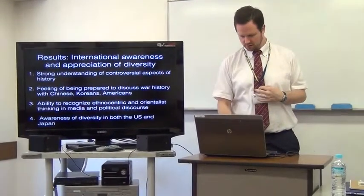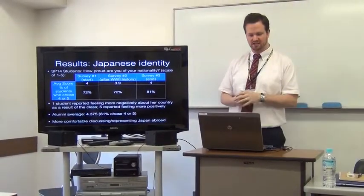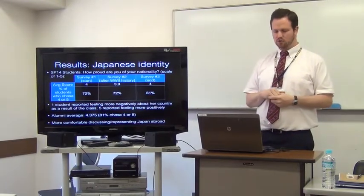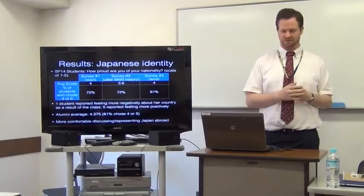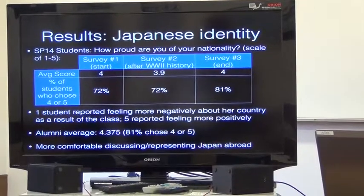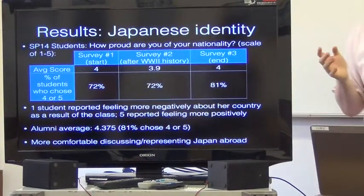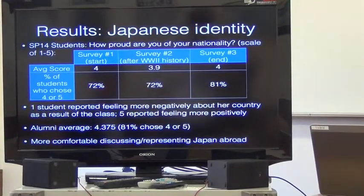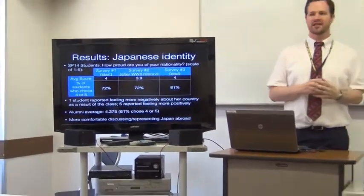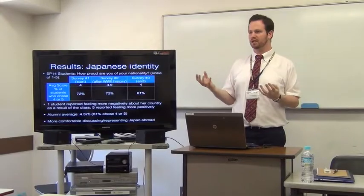If I approach the Ministry of Education's goals about protecting Japanese identity: looking at students from this past semester, the average score of how proud they were of their nationality on a scale of 1 to 5 was 4, then 3.9 after World War II history, and then 4 again at the end. So no real dramatic change here, despite getting into the dark material. And looking at how many students chose the higher levels — 4 or 5 points on the scale — that actually went up by the end of the semester, so we could say that in some cases we'd even made students more proud.